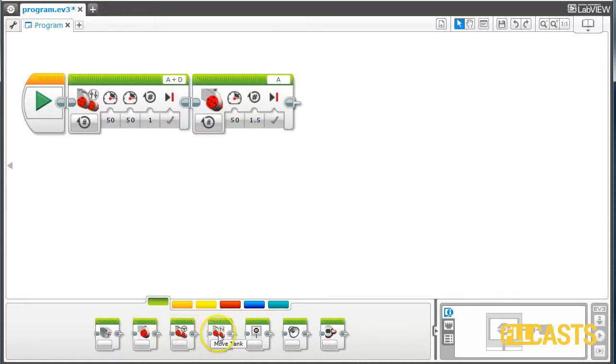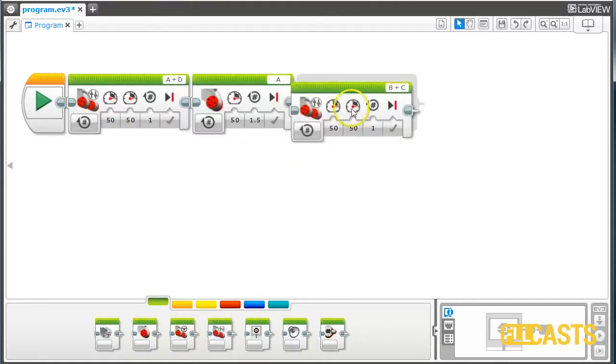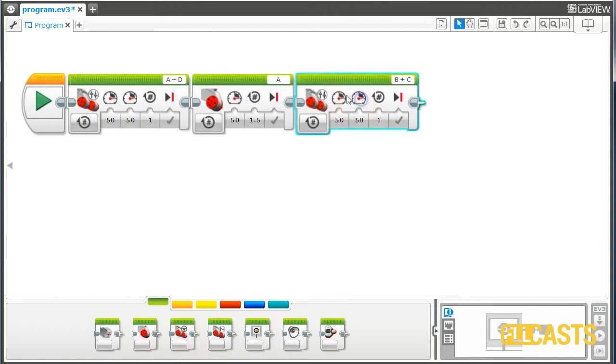And then move again forward with the tank block on A and D and move for one rotation. Let's see how the robot moves.